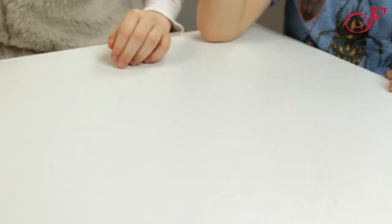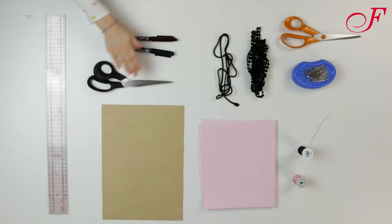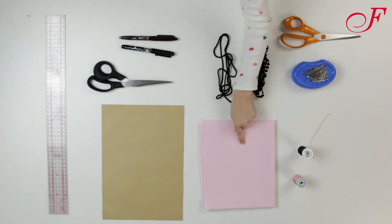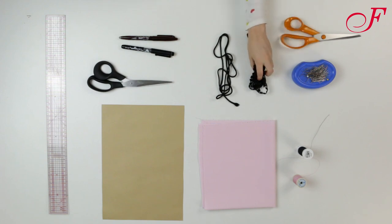To make this project you will need a sheet of paper, a ruler, scissors and pencils to make the pattern, fabric scraps, thread, some pins, scissors, and ribbons.